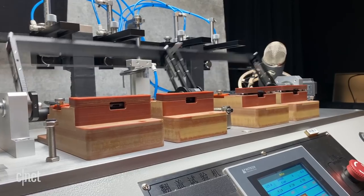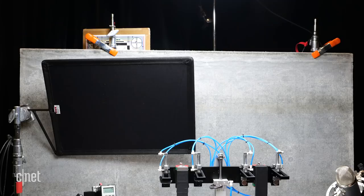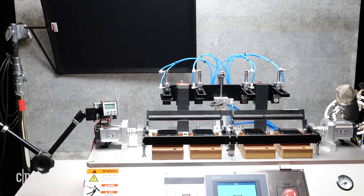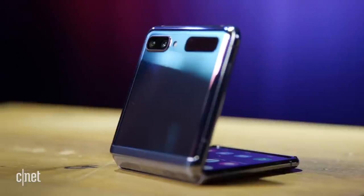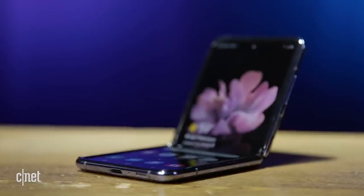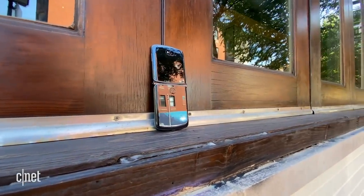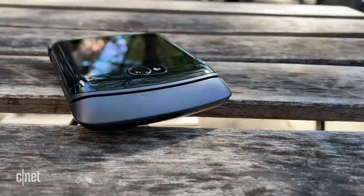Now this is a small version of the machine used to fold and unfold the Razr. It holds four phones at the same time and fully opens and fully closes each phone. Unlike the Galaxy Z Flip, which is designed to be open to a variety of positions, the Razr is designed to be either open flat or completely closed.